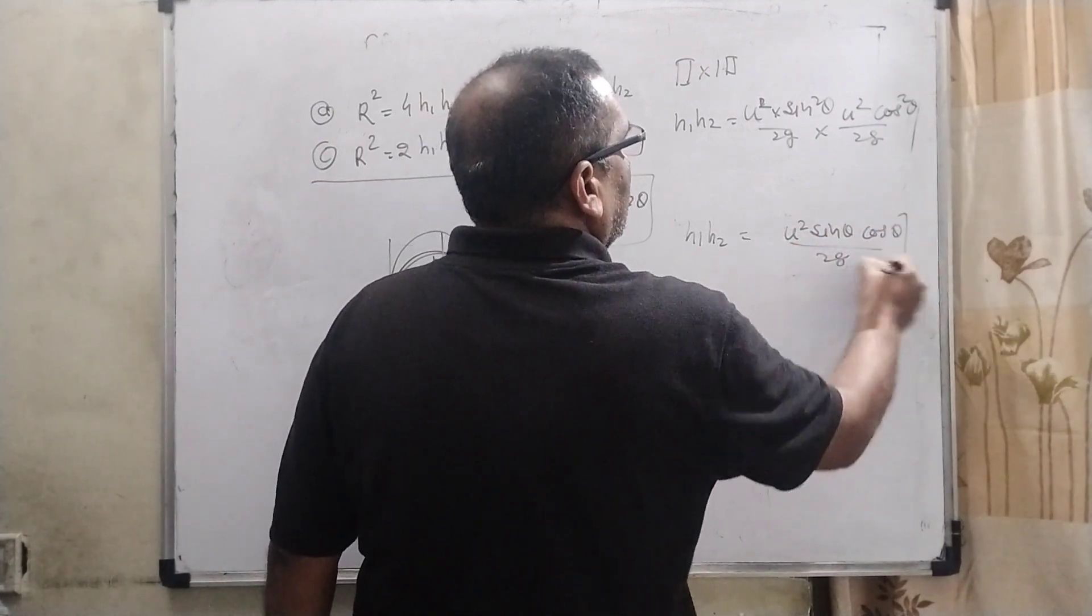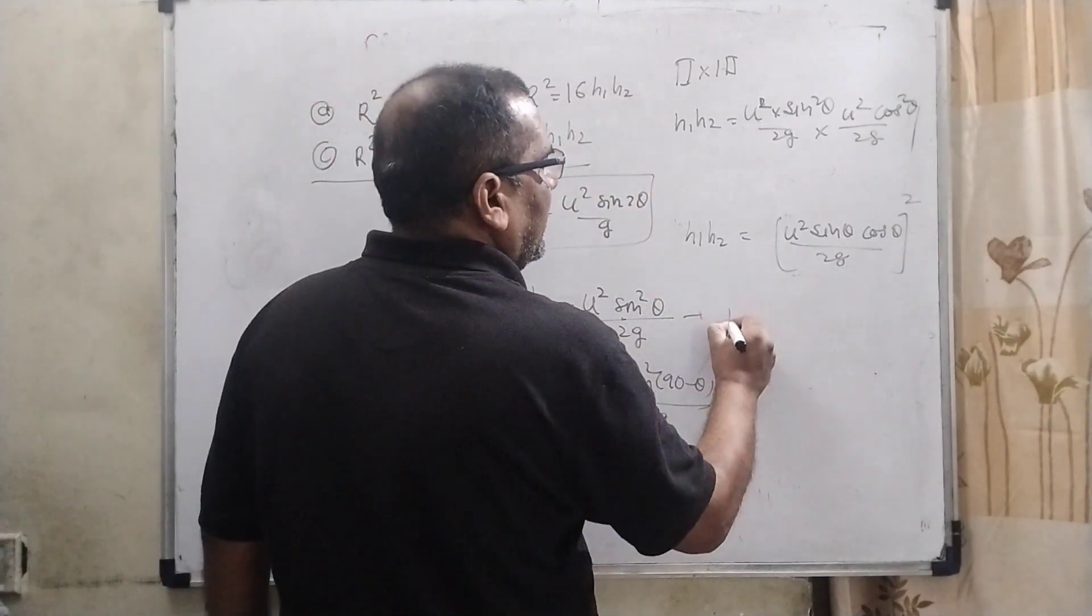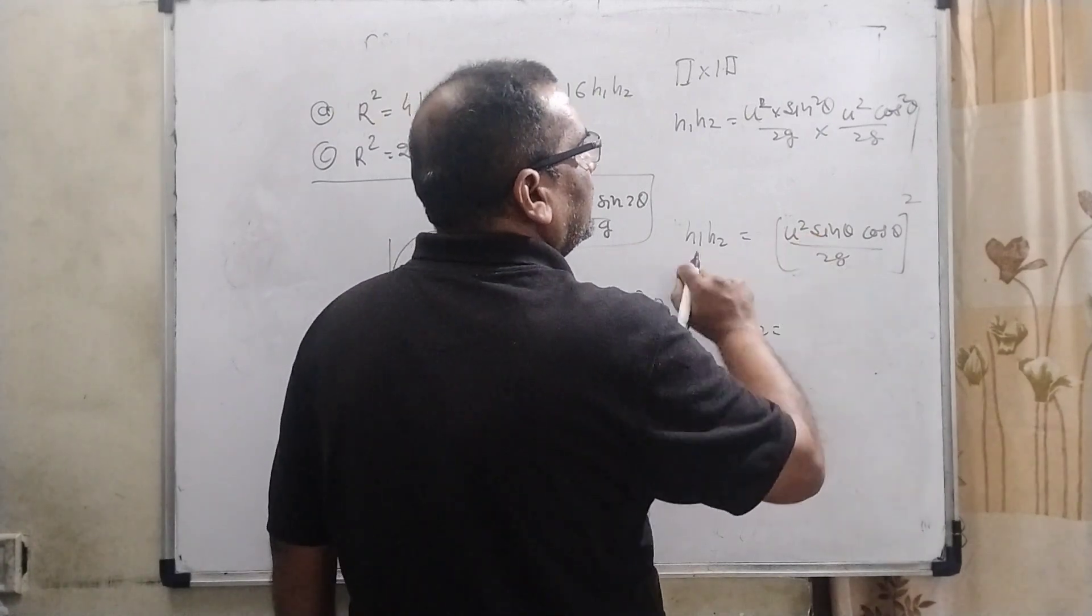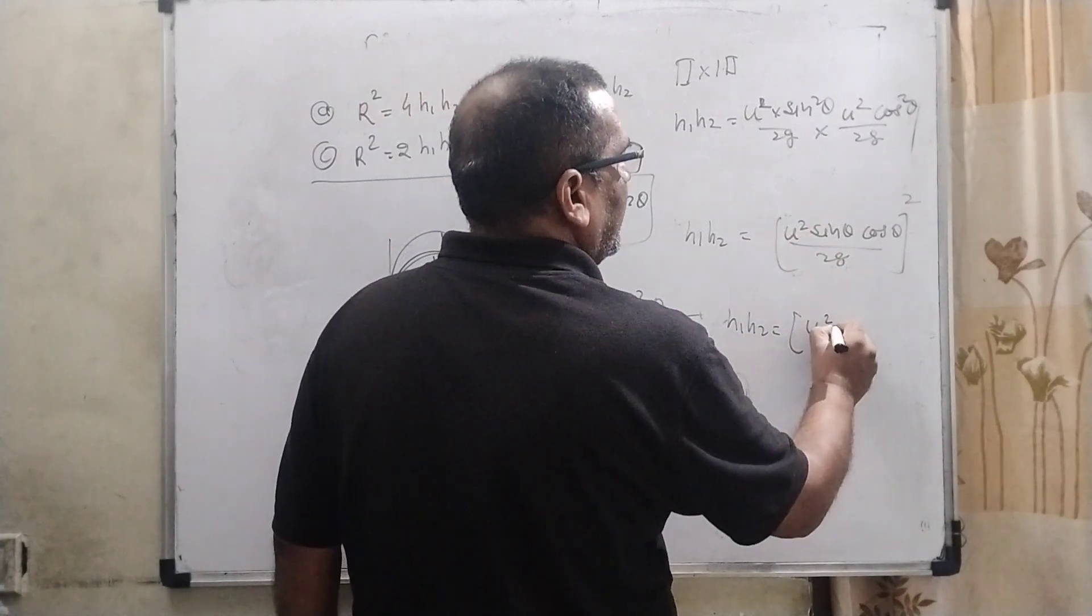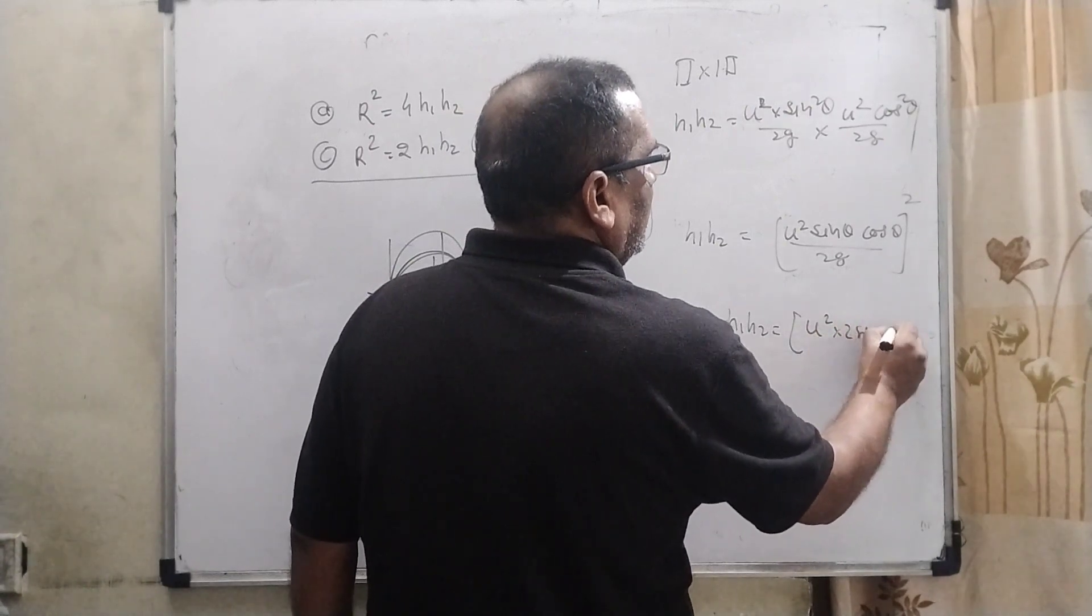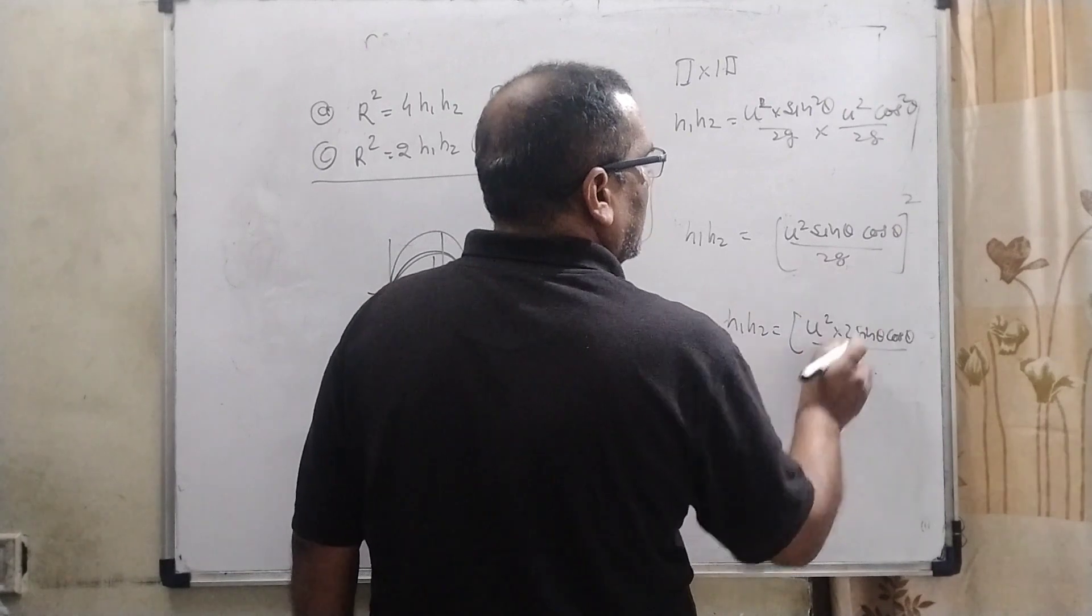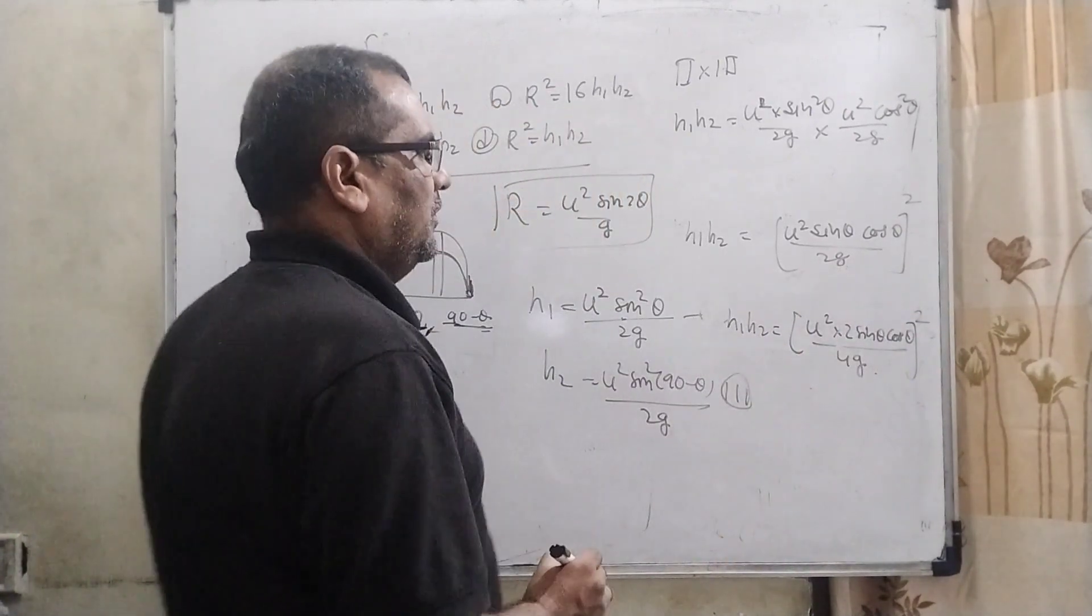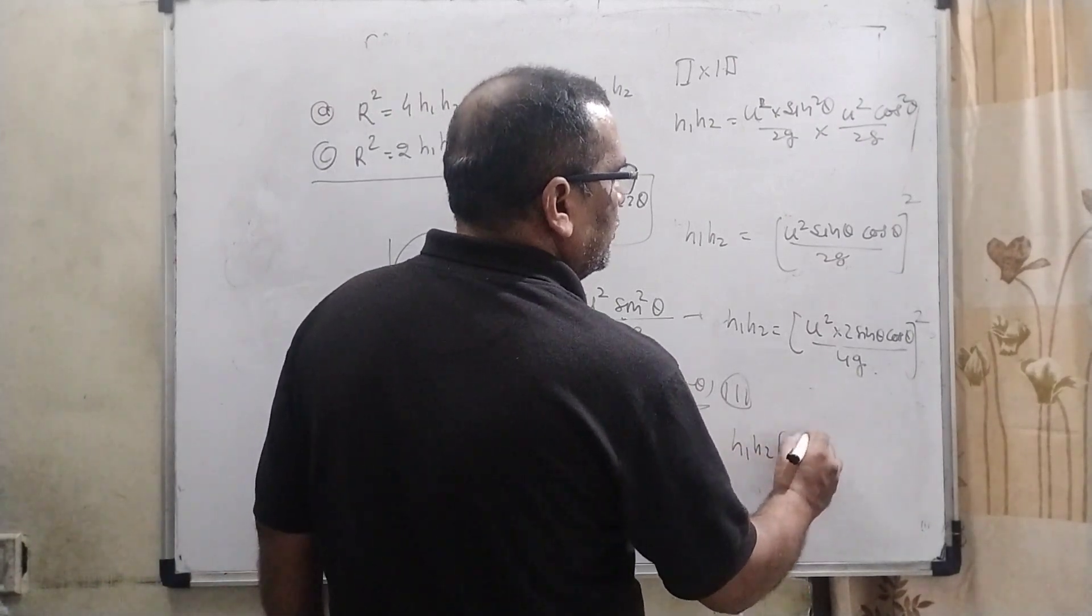So here h1 h2 multiply by 2 numerator and denominator then we get u square 2 sine theta cos theta divided by 4g whole square. So now it becomes h1 h2 equal to u square sine 2 theta upon 4g whole square.